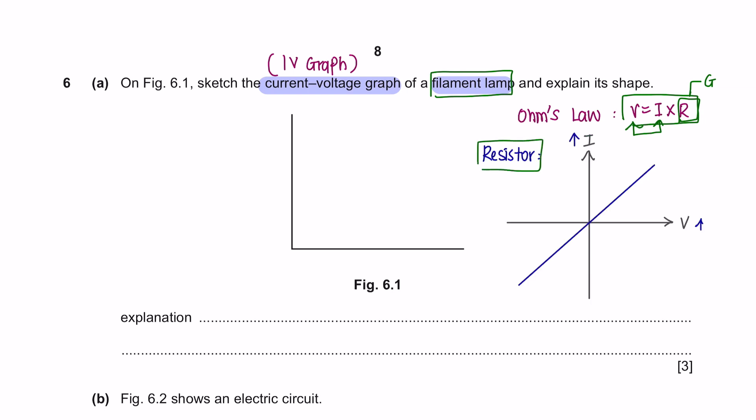The IV graph for a resistor is very simple. The current is proportional to the potential difference. This is because the resistance is constant. For a filament lamp, the relationship is more complicated. The current increases at a proportionally slower rate than the potential difference.